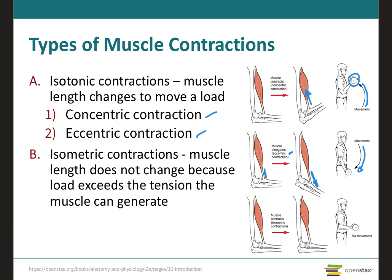An isometric contraction occurs when the muscle produces tension without changing the angle of the skeletal joint, so the joint remains the same as seen here on this image. In an isometric contraction, the sarcomere will shorten and there is an increase in muscle tension; however, the load will not move because the force produced cannot overcome the resistance provided by the load.